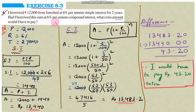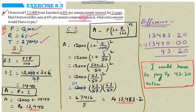First let us write what is given in the question. Principal is equal to rupees 12,000. Rate of interest R is equal to 6%. Time period is equal to 2 years. We will calculate both simple interest and compound interest, then find the difference. Simple interest formula: SI is equal to PTR divided by 100.